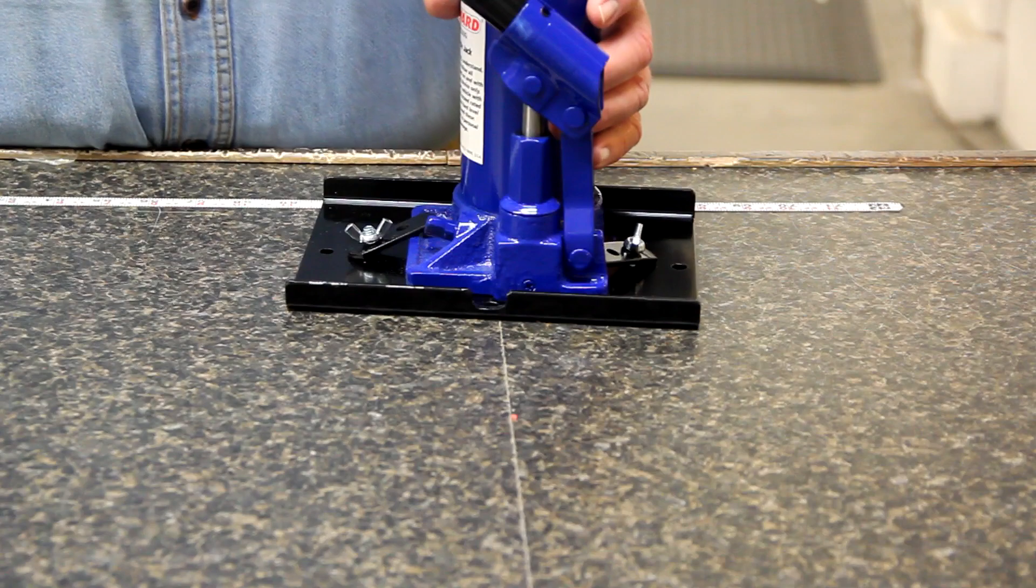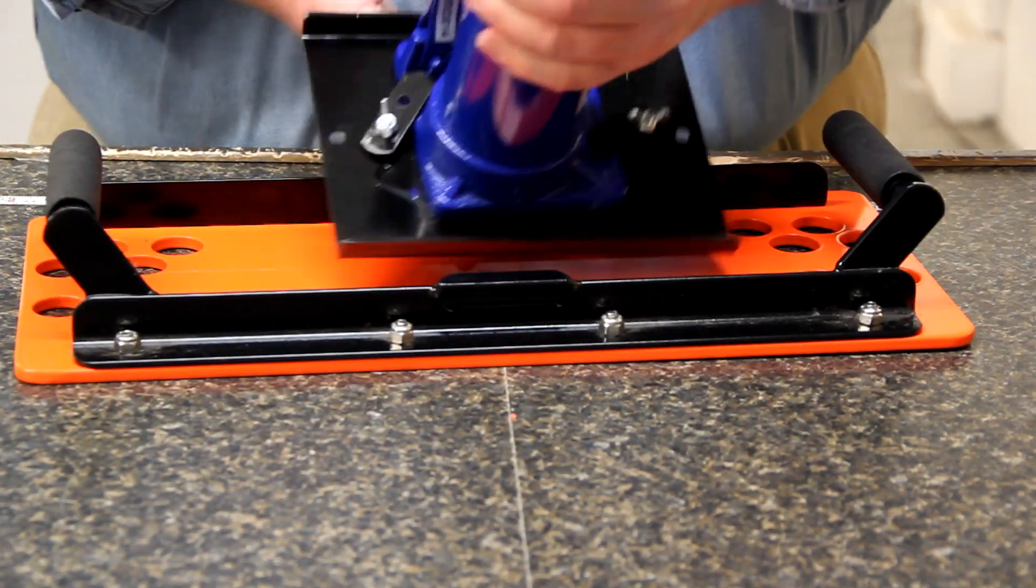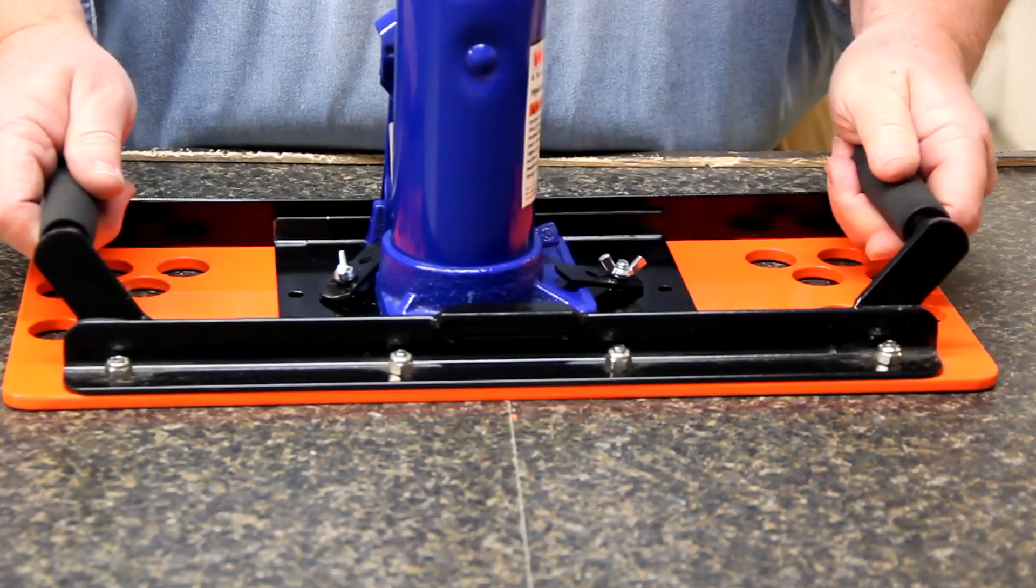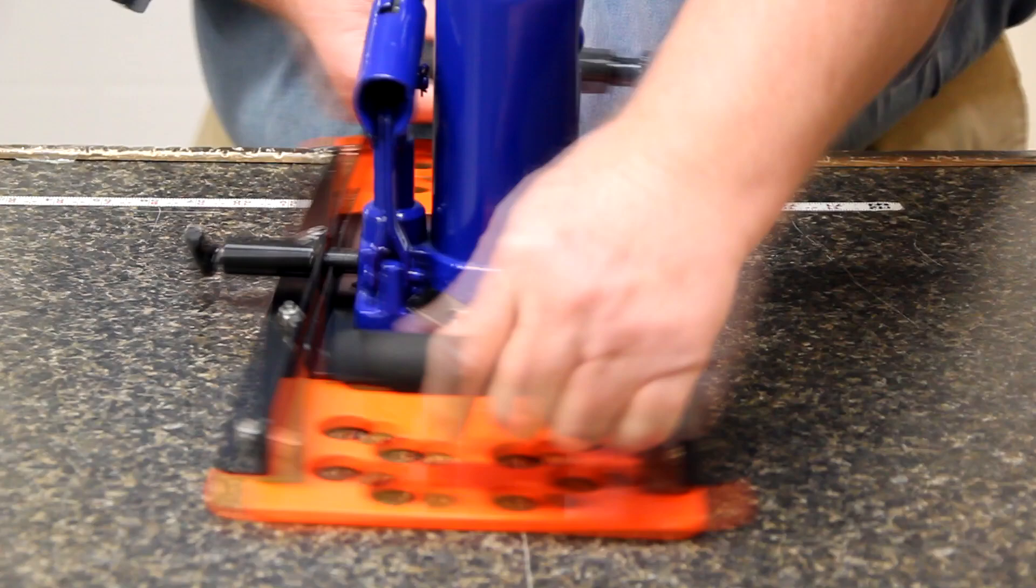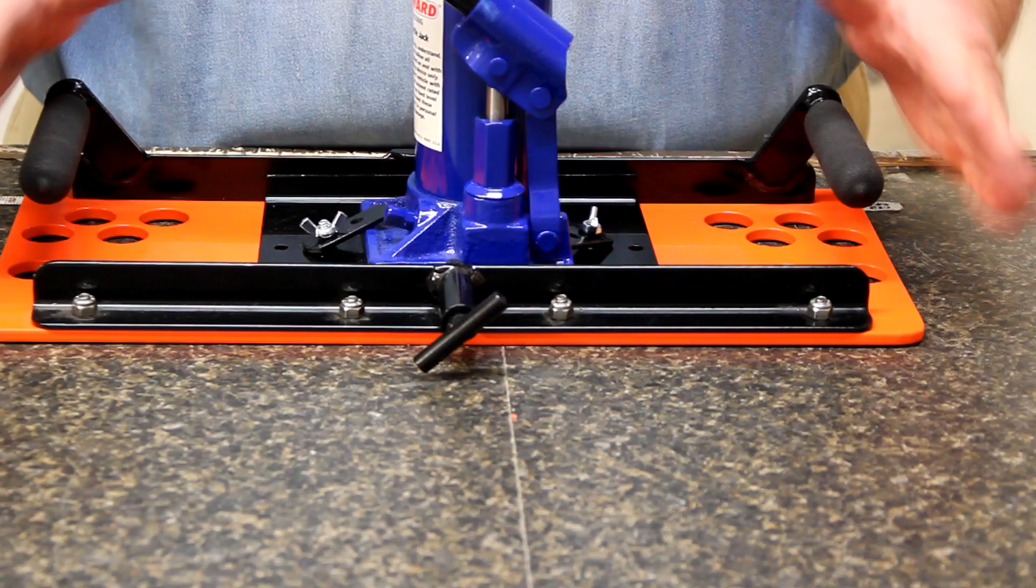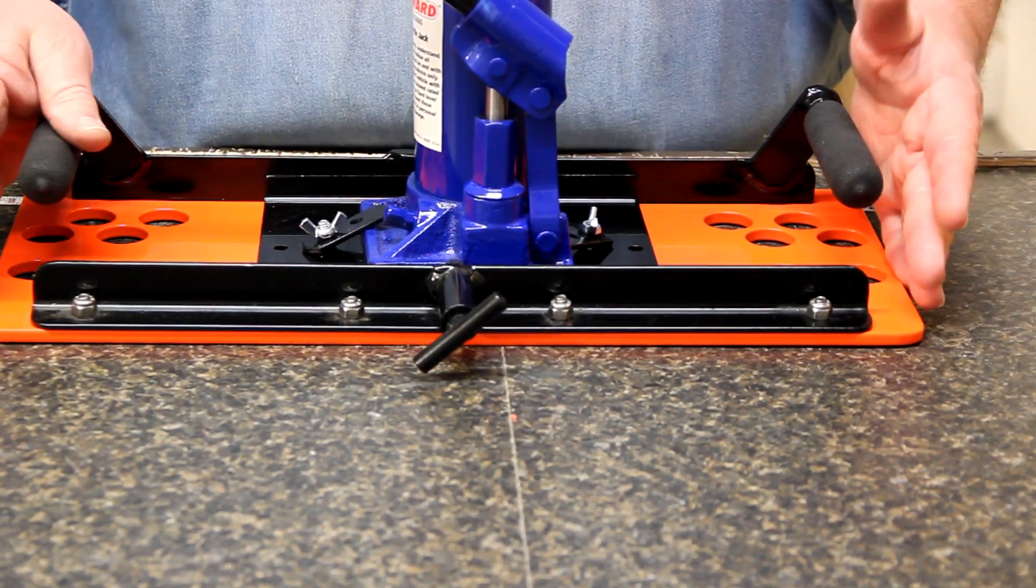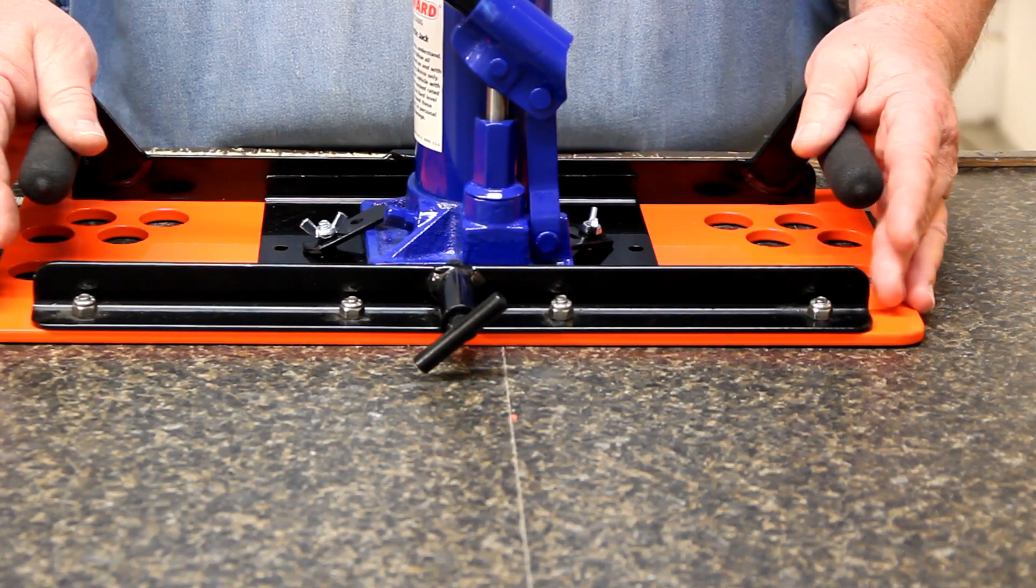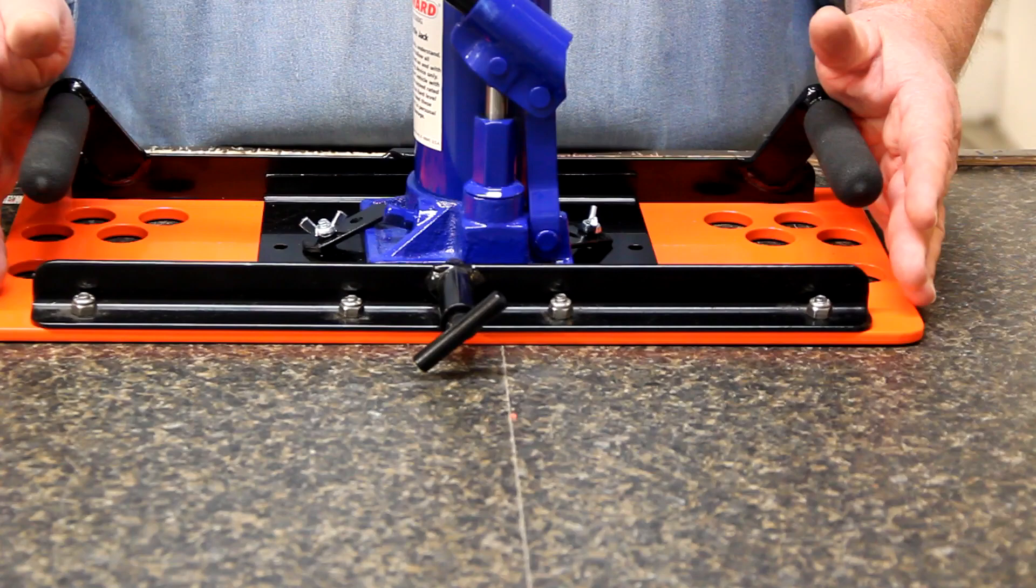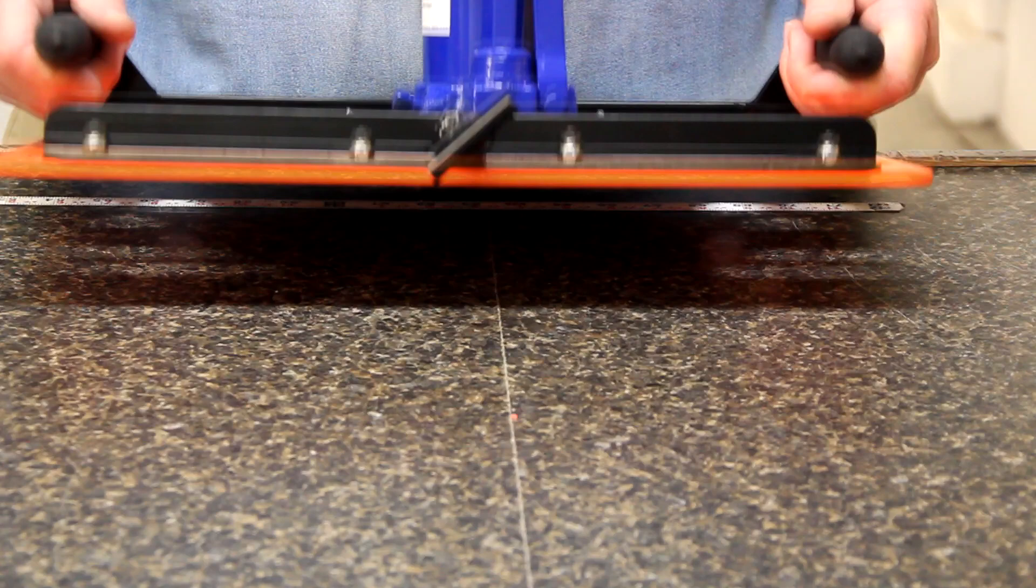Then, add that to the universal mounting plate. Just snaps in. Turn this around. Now, we have 144 square inches of surface area. So, if you had a 12,000 pound load, we'd be down around 100 pounds per square inch. This will allow you to operate in soft soil conditions.